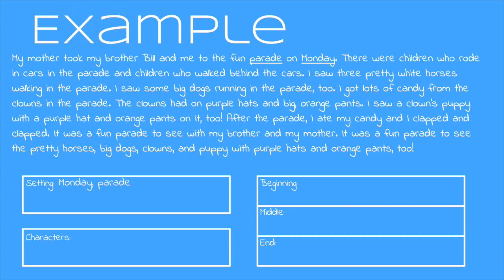Now we want to look for the characters. Let's go ahead and underline those too. The characters in the story are the mother, the brother Bill, and me. There are a few other characters in the story like the clowns and the puppy, but they're not really doing much action in the story so we're not going to include them in our graphic organizer. Remember, we're looking for just the important details — the key details. So let's add mother, Bill, and me to the graphic organizer.